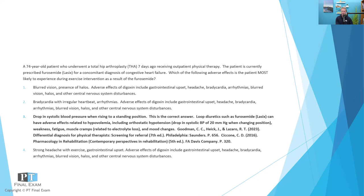Furosemide, or Lasix, is a loop diuretic. It prevents the resorption of fluid back into the kidneys, so you're eliminating sodium and chloride. It also tends to flush out water-soluble minerals — primarily electrolytes: sodium, potassium, and calcium — which can result in muscle cramping, like a charley horse type of situation due to electrolyte imbalance. But the primary effect is that drop in blood volume, which can result in orthostatic hypotension. Additionally, blood loss associated with major surgery like total hip arthroplasty can also contribute to hypovolemia.